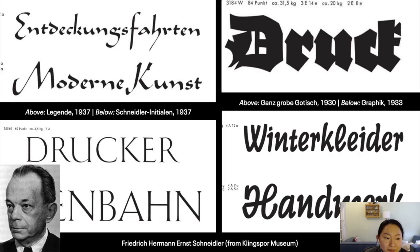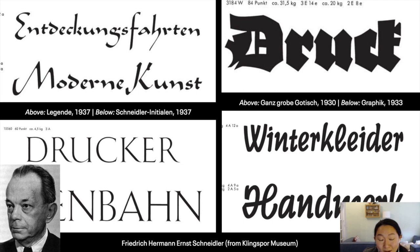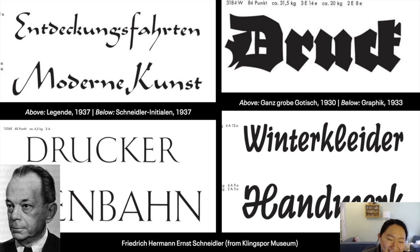Ernst Schneider is a character you might have heard of because he was such an influential teacher in Germany. He's regarded as the founder of the Stuttgart School, and his student roster includes Emma Reiner, Georg Trump, Walter Brudi, Rudolf Schaumann, and Albert Kapr — a lot of famous students who also deserve lectures in their own right. I should note that on his Wikipedia page there is a note that he was classified as a follower during the denazification process. I think it's important to note the characteristics of these people.